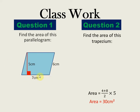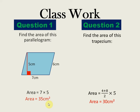In this parallelogram, the base is 7 cm and the height is 5 cm. There is also a 6 cm measurement, but this is the slant height, not the straight height. When finding the area of the parallelogram, you multiply the base by the straight height — where you see the square mark in the figure. Applying the formula: base × height = 7 × 5 = 35 cm².